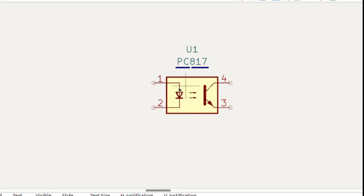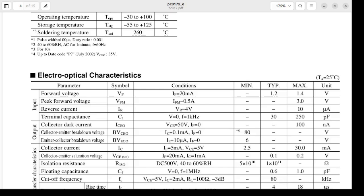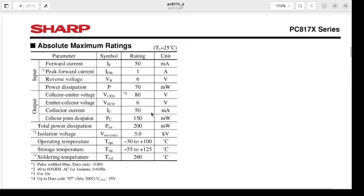Now our second part is output. We are now going to discuss about output. See this: collector-emitter voltage is 80 volts, emitter-collector voltage is 6 volts, collector current is 50 milliamps. So we cannot get more than 50 milliamps from this device, more than 80 volts from this device.